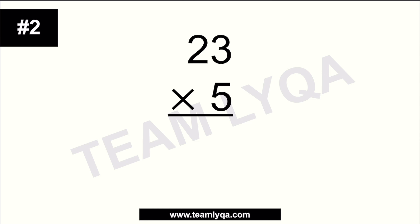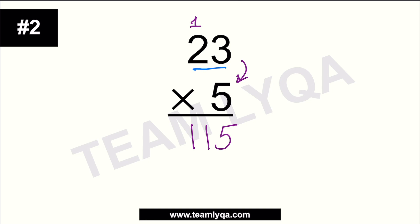Next, we have 23 times 5. Looking at 5 first, multiply 3 times 5 — that's 15. Write the 5, carry the 1 to the left. Then 2 times 5 is 10, plus 1 is 11. So the answer is 115. There's also a shortcut for multiplying by 5: divide 23 by 2. 2 divided by 2 is 1, 3 divided by 2 is 1 with a remainder of 1, which makes the last digit 5 instead of 0 — giving you 11.5, or 115. Same answer. Link to that lesson is in the i-button above.